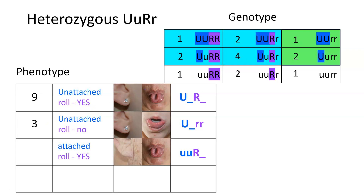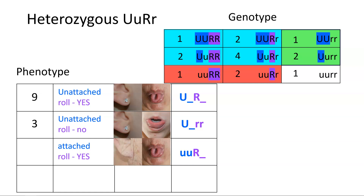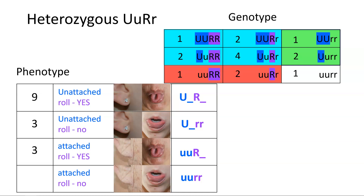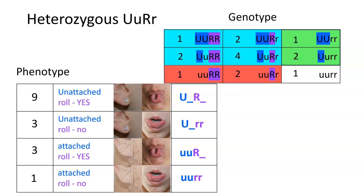The next characteristic is the attached earlobe — no capital U — but they have the capital R, which means they can roll their tongue. This is found in the third row in the first two columns: one plus two gives us three. And the last one is the double recessive — attached earlobe and the inability to roll their tongue — and we only have one of those. We go back and check our math: nine plus one is ten, plus three is thirteen, plus three is sixteen — it checks.